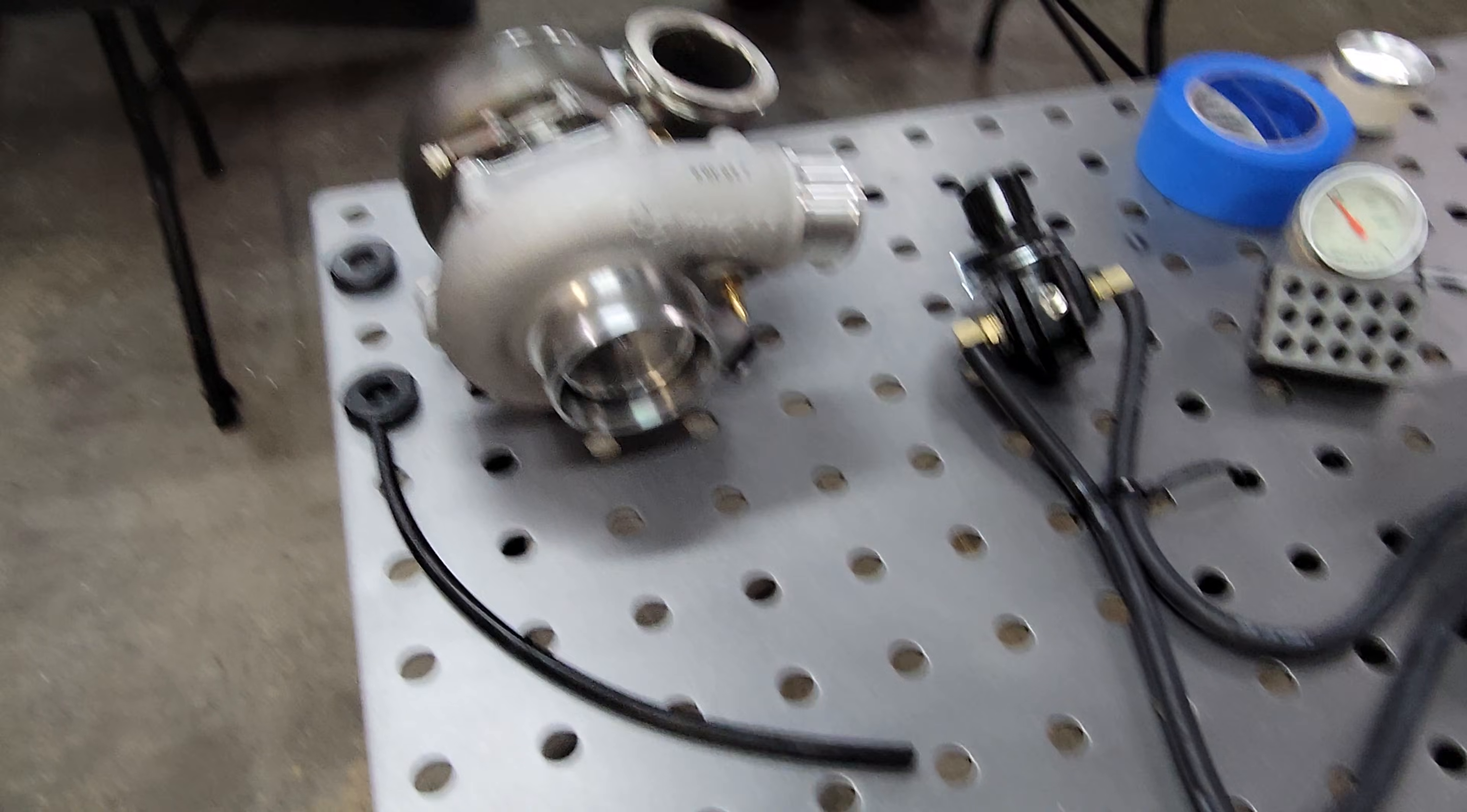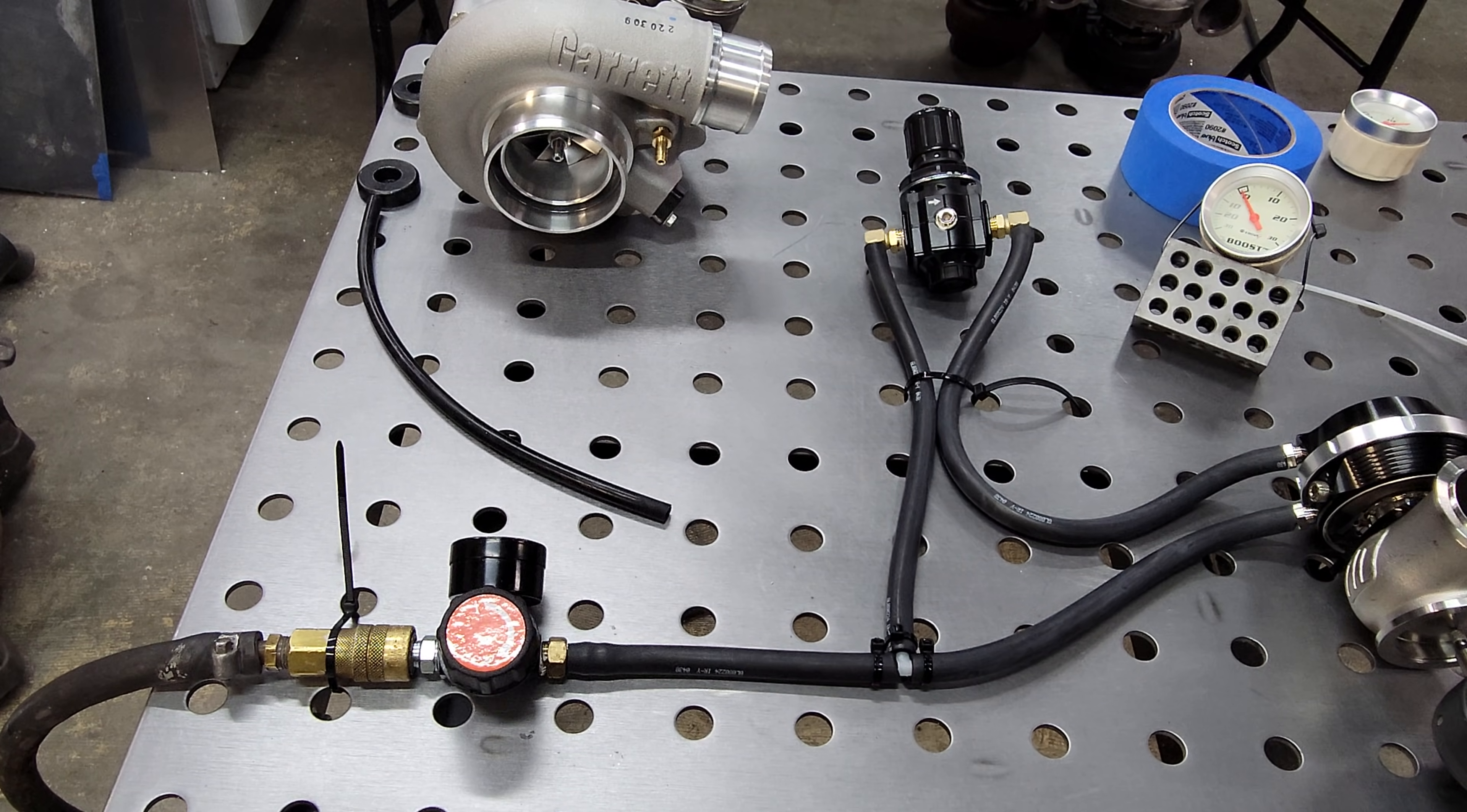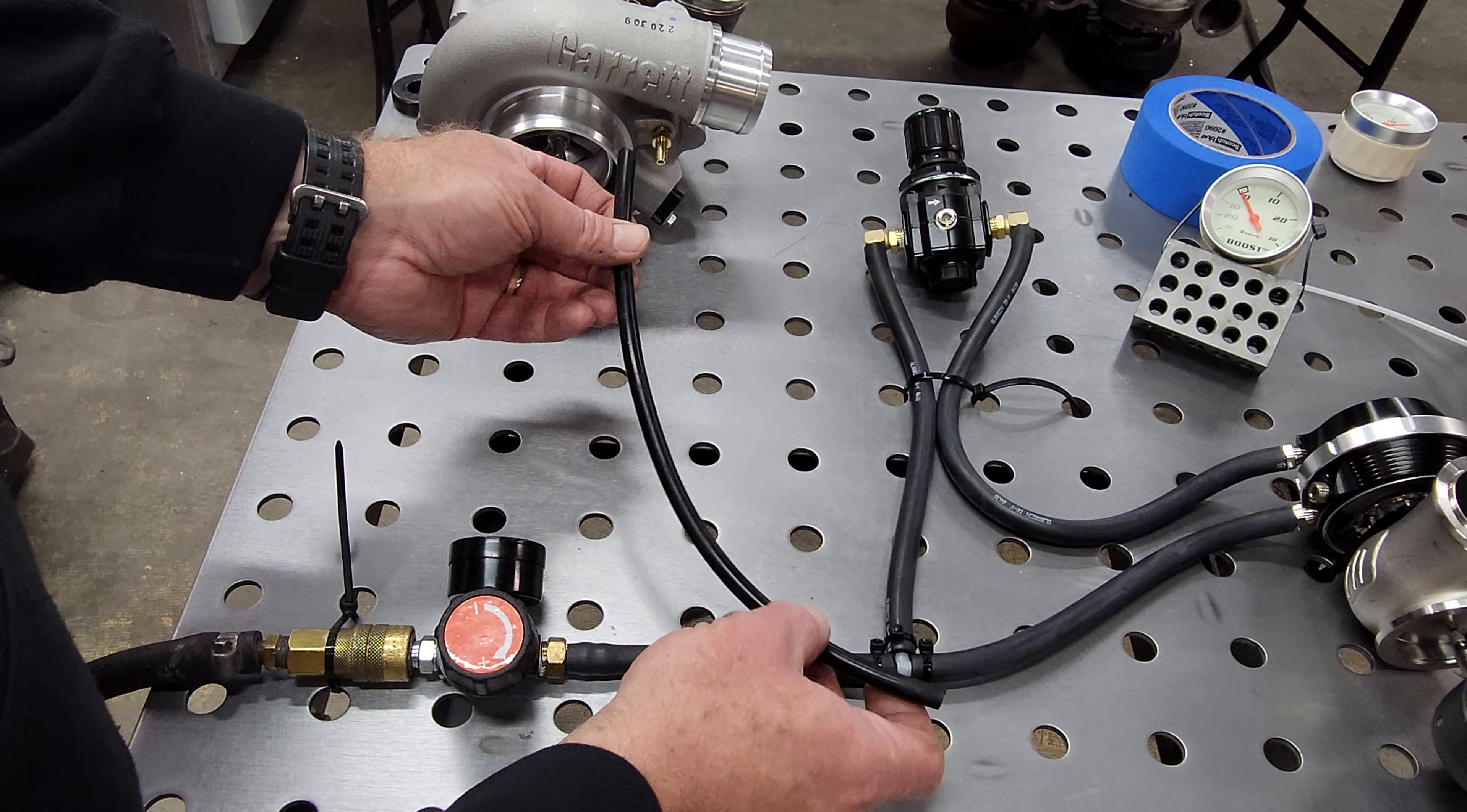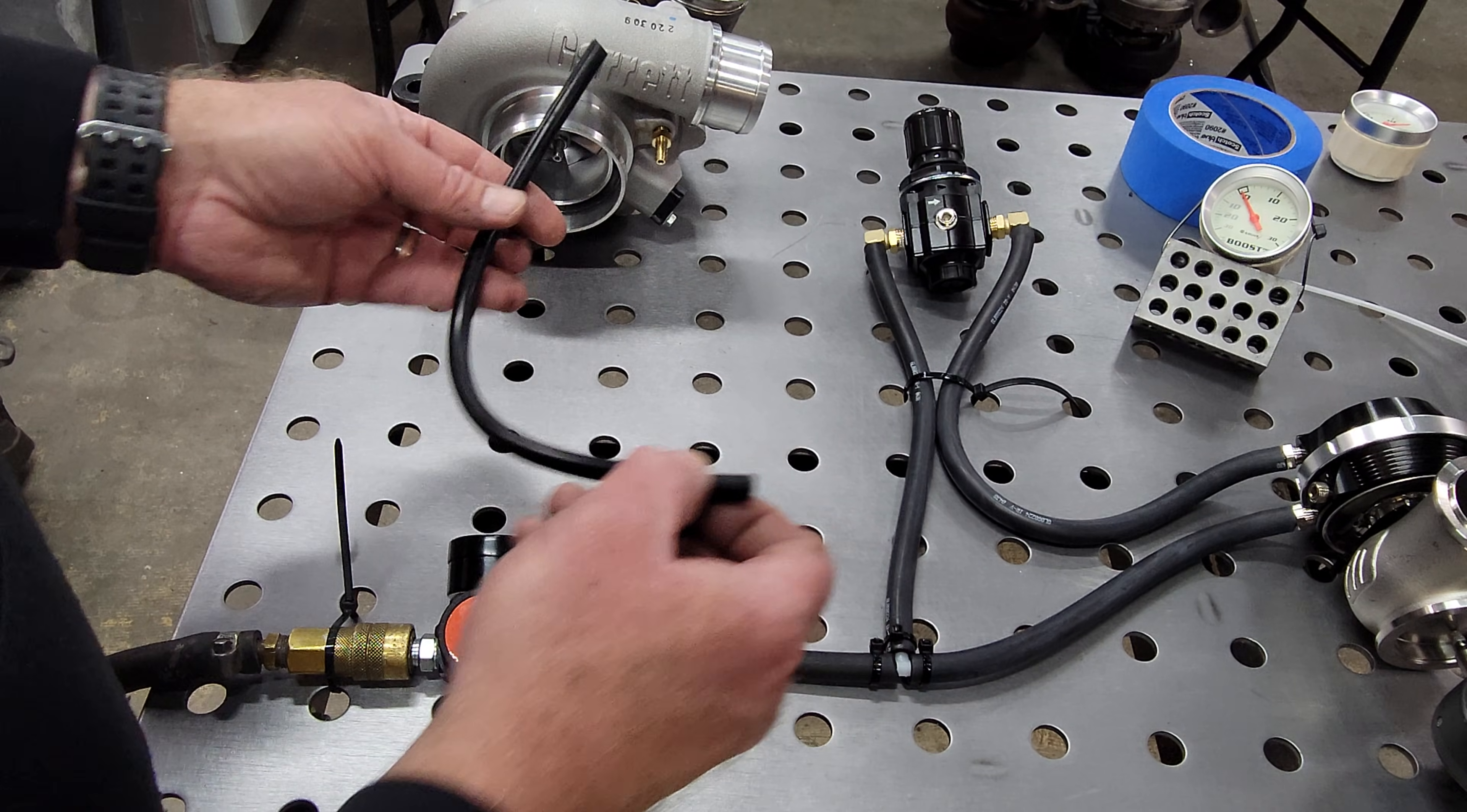Alright, so obviously we have the turbo right here. As you notice, it's not hooked up, but we're going to use our super imagination right here. This is a regulated air source, so this is just coming straight from my air compressor. But let's pretend that this is not hooked up to an air regulator, that this vacuum line would go to this first T-fitting straight from the compressor cover of the turbocharger. So, what that right there will do is provide your pressure source.